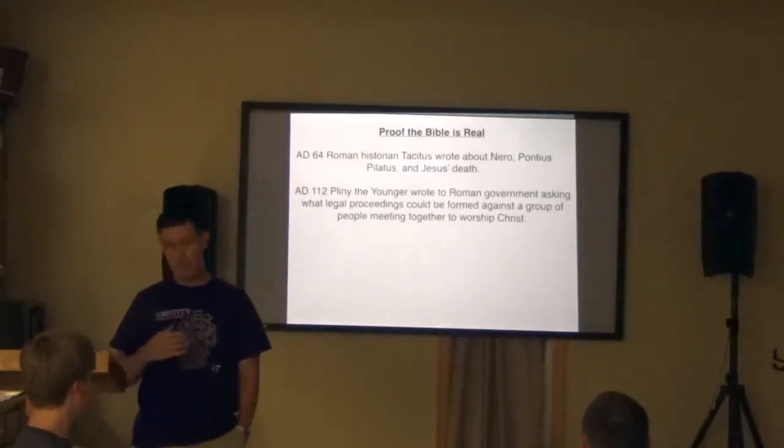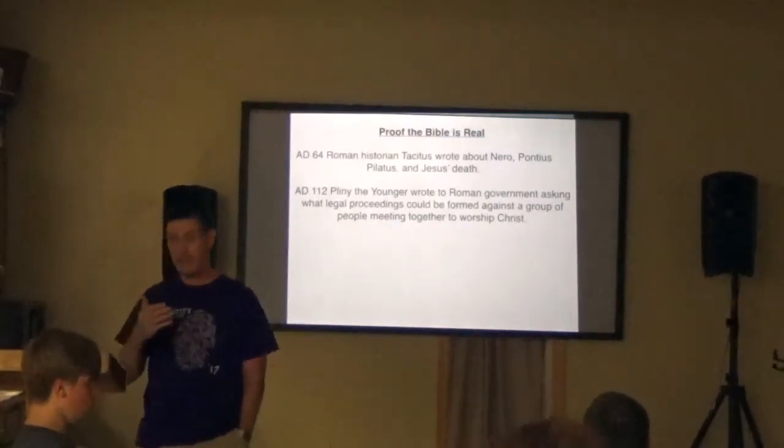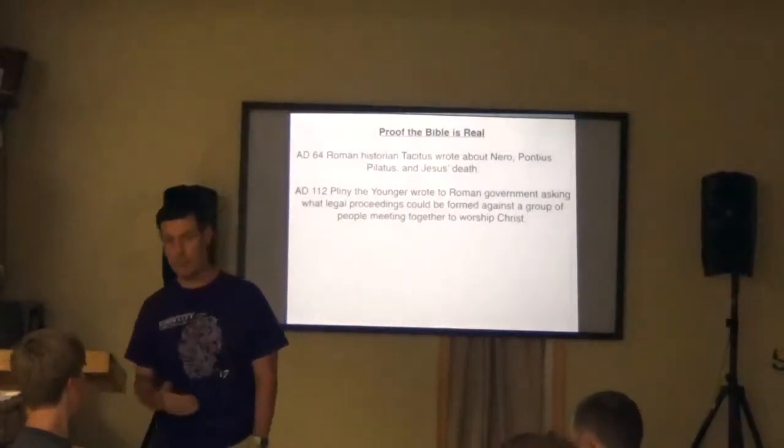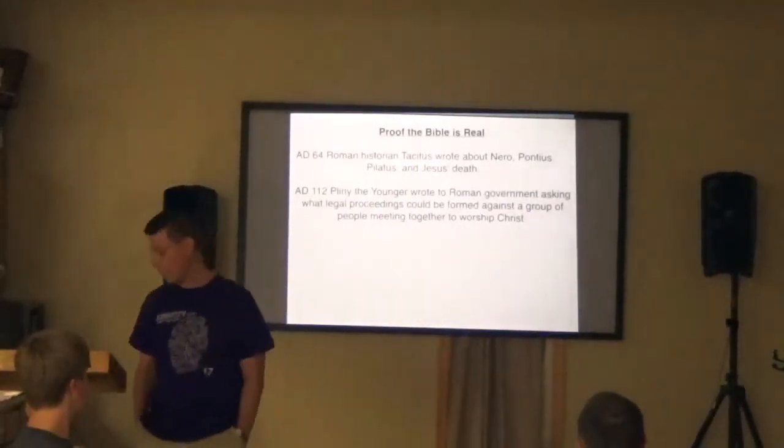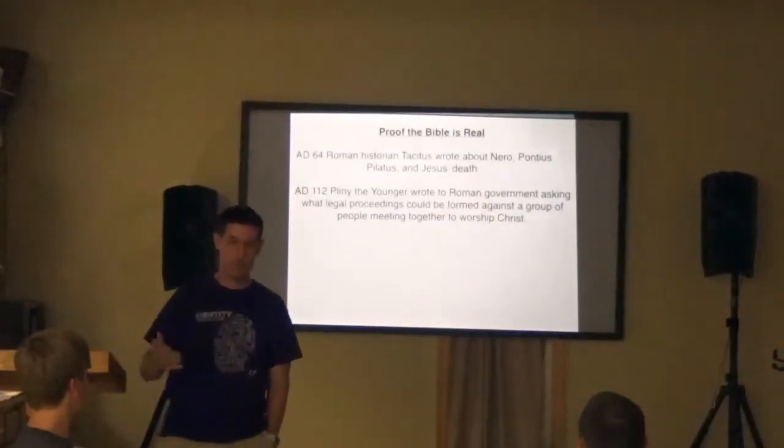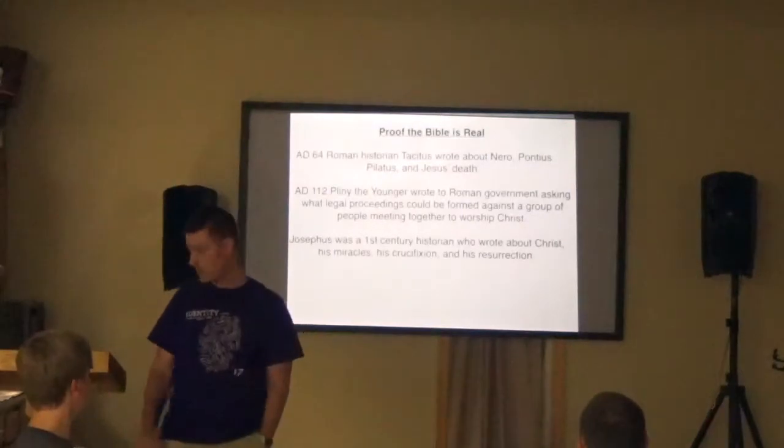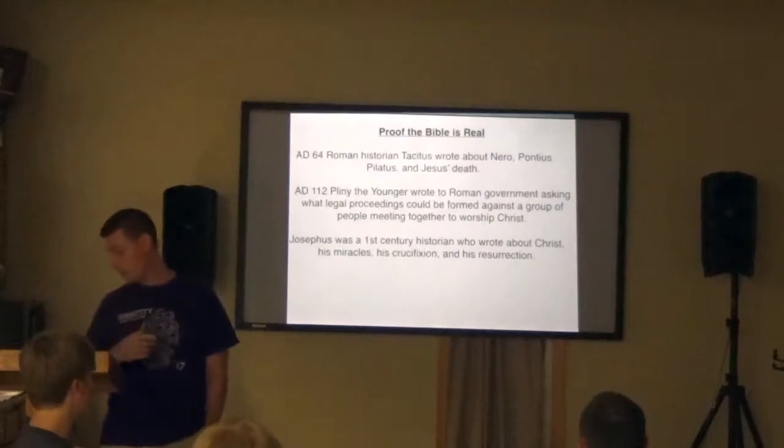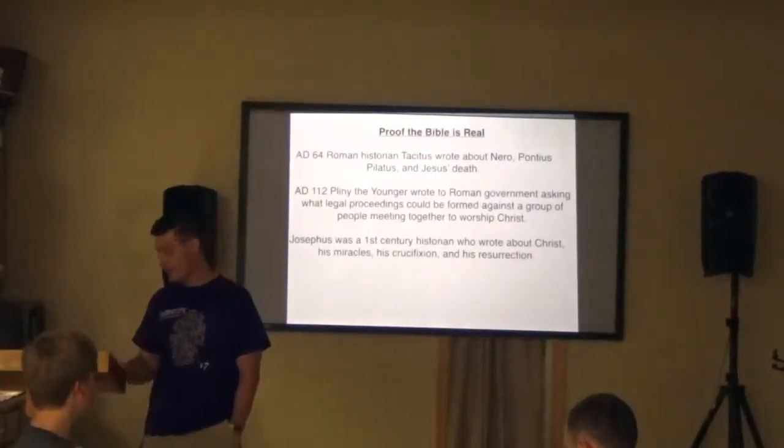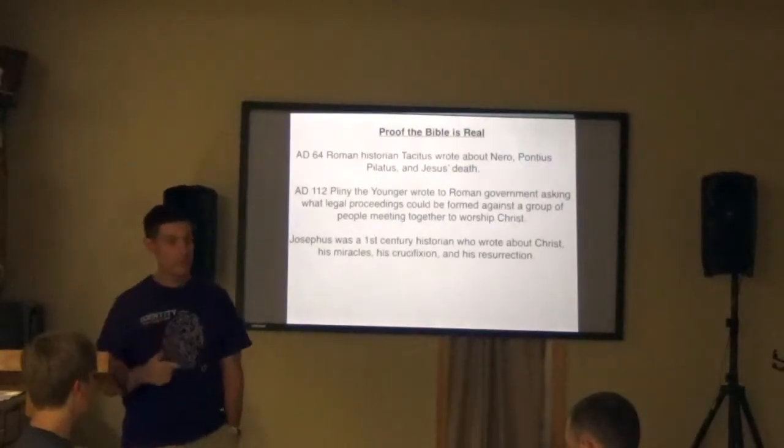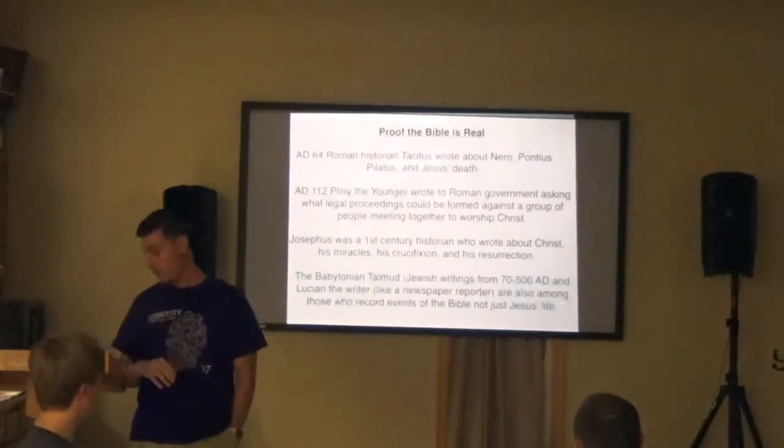A few short years later, this dude by the name of Pliny. He was a guy who wrote to the Roman government because he was trying to figure out, what can I legally do to these Christians who are all over the place? What can I legally do to them to try and stop them from spreading their message about this guy in the name of Jesus? Again, a Roman person, not a Jewish person, not a Christian. But somebody outside of the Christian faith trying to find a way to eradicate Christians themselves. Josephus was a first century historian. So that means he wrote historical facts, things that actually happened and can be confirmed. He wrote about Christ. He wrote about the miracles that Jesus did. He wrote about his crucifixion. And he even wrote about Jesus appearing after his resurrection. A historian records historical facts and accuracy.